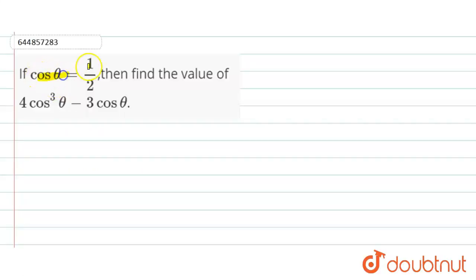If cos θ = 1/2, then find the value of 4cos³θ - 3cos θ. Now let's come to our solution. So here we have to find the value of 4cos³θ